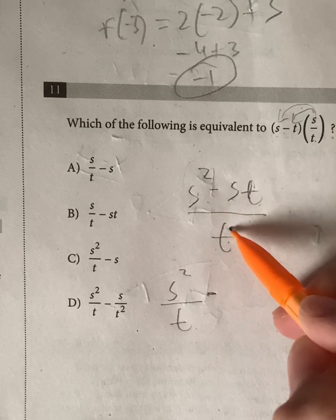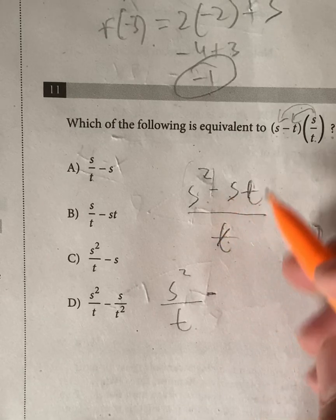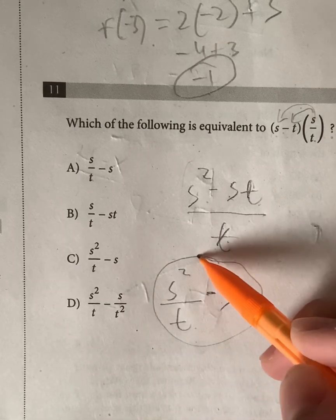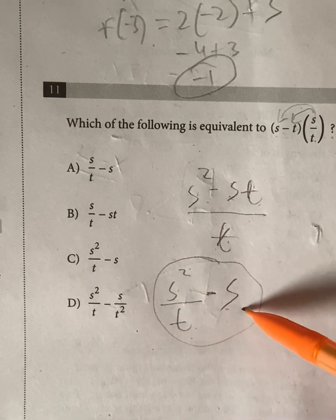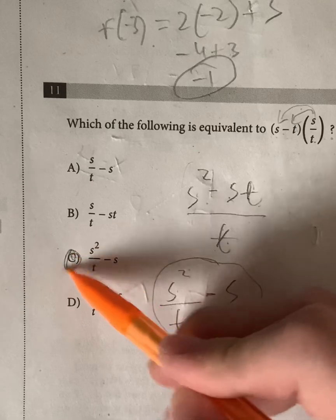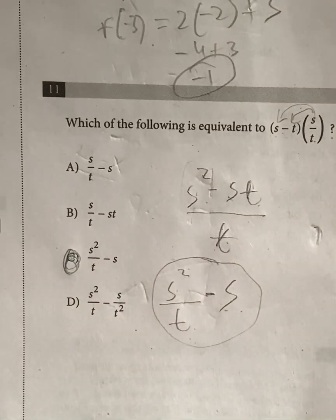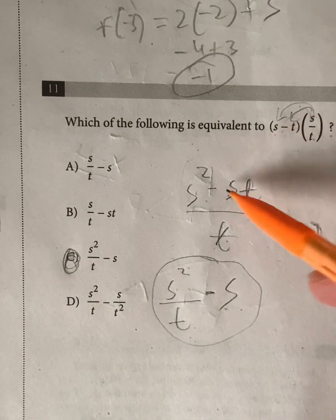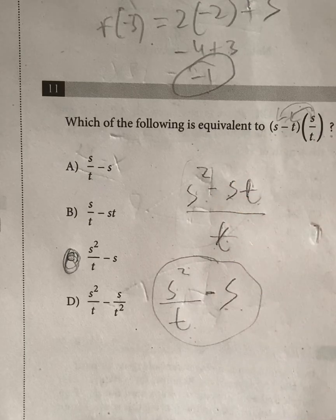And now let's divide s squared over t. You can't really simplify that. So we're just left with s squared over t. And then minus st over t. The t's cancel out. So on top, it just leaves us with s. So meaning your simplified answer should be s squared over t minus s. Also meaning your answer has to be c. So all we had to do was distribute and just simplify whatever we could.